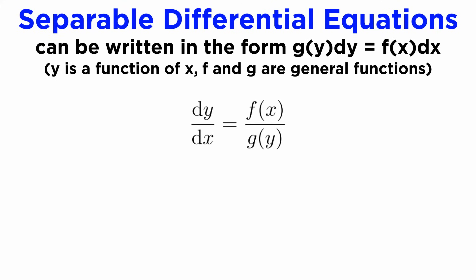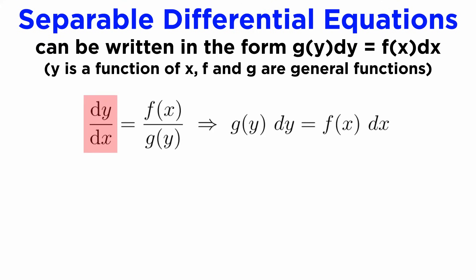If we treat dy dx like a fraction of the quantities dy and dx, we can cross multiply to get our separated form. From here, integrating both sides will lead to the solution for any separable equation.